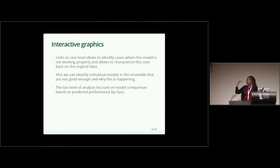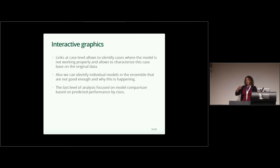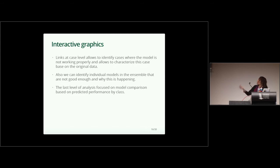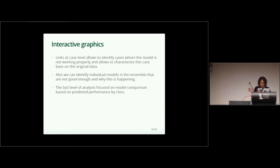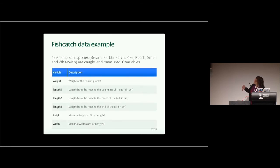For example, in the three levels I mentioned: the first level at individual case level can give us information about whether we are doing wrong on specific points, or maybe some class is more difficult than others, and we can use that information to transform our model. The second level lets us identify individual models, which can be useful to prune our forest. The last level is to make a comparison between performance — in this case, I use random forest for comparison. I will go over a small example to show how these interactive visualizations work.